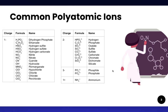Here is a table of common polyatomic ions and their charges. Each of these acts as a unit and will combine with cations in order to form neutral molecules.